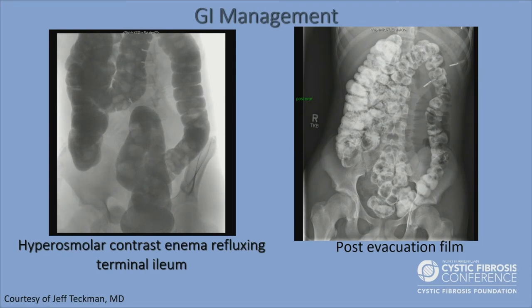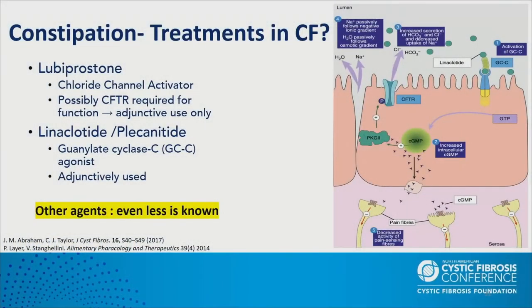Additional constipation treatments include lubiprostone — a chloride channel activator — though CFTR may be required for its function, so it's usually used as an adjunct to osmotic laxatives. Linaclotide and plecanatide are guanylate cyclase agonists that stimulate chloride, sodium, and fluid secretion into the lumen. There have been small case reports examining these agents in CF individuals with some success. The Galaxy study on GI medication use shows that many patients with constipation are on osmotic laxatives — usually polyethylene glycol — while linaclotide and lubiprostone are used in smaller numbers.